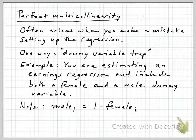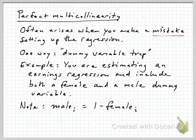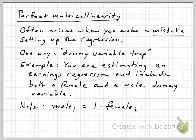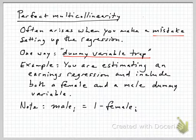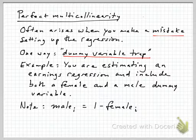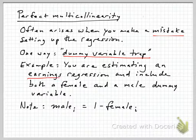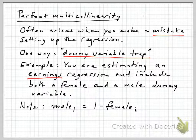First, the case of perfect multicollinearity. This often arises when you make a mistake setting up the regression, and one common well-known way this can happen is the so-called dummy variable trap. A simple example would be estimating an earnings regression, where the y variable is the earnings of individuals and a set of x variables, and maybe you want to include a control for gender.